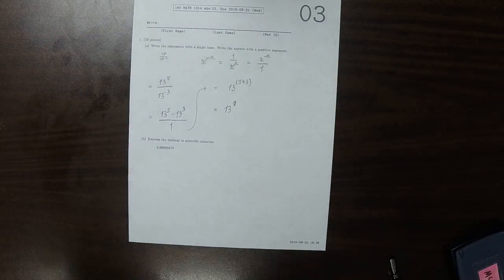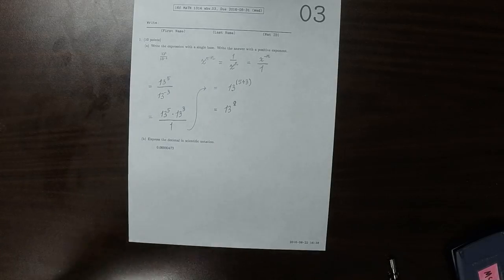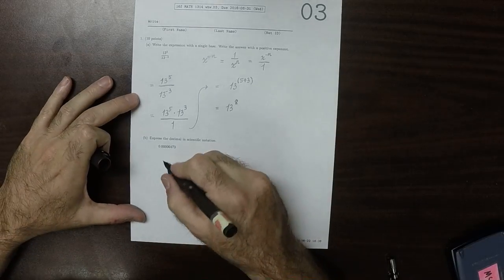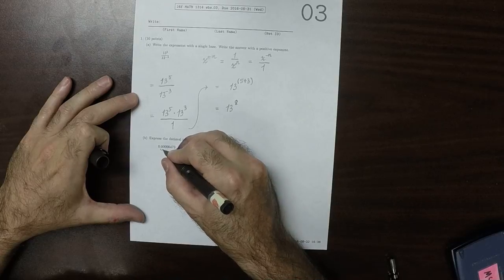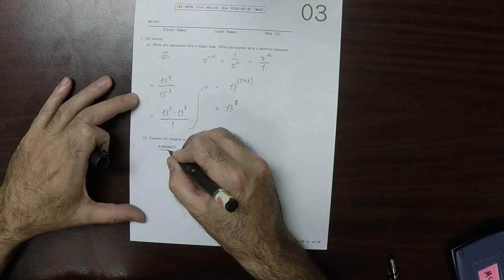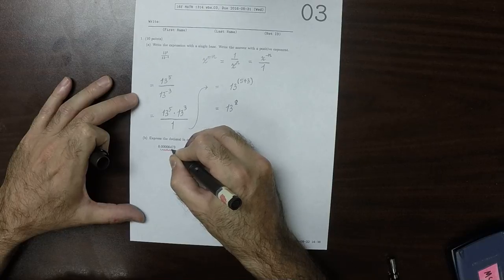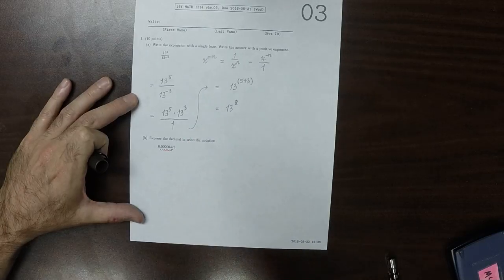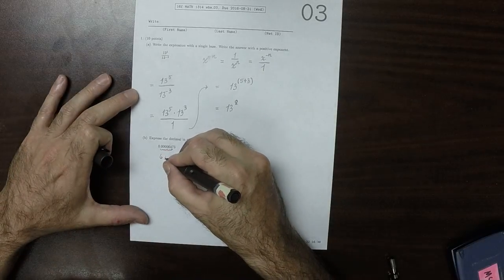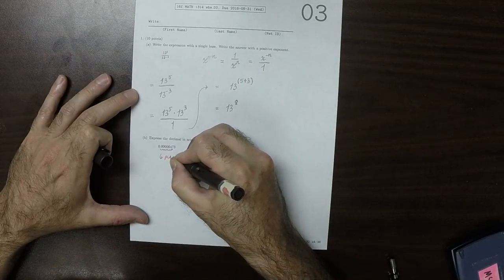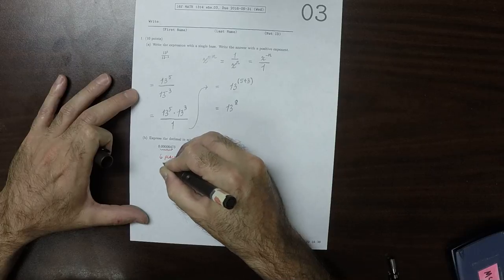For part b, we need to move this decimal to the right. So this would be 1, 2, 3, 4, 5, 6 places. So the decimal needs to be moved 6 places to the right.